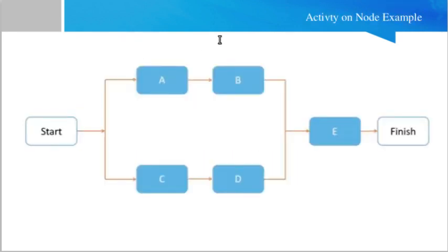Here I want to show you an activity on node example. If you see, a project will start from here. From the starting point, activity A and activity C will both start in parallel. Once activity A finishes, then activity B will start. Similarly, activity D will start once C finishes.